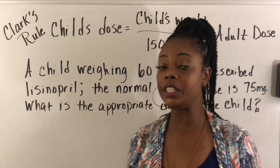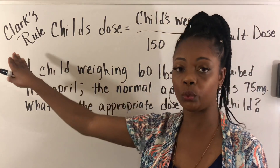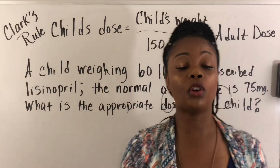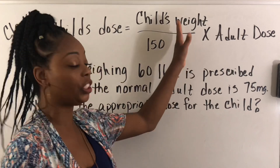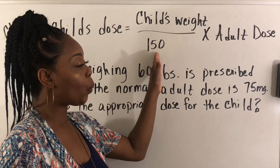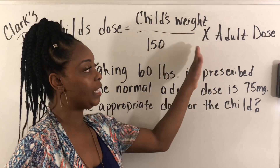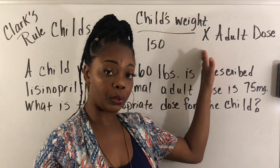The formula for Clark's Rule is: the child's weight divided by 150, times the adult dose.